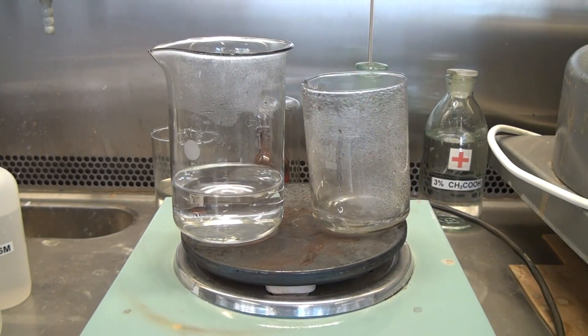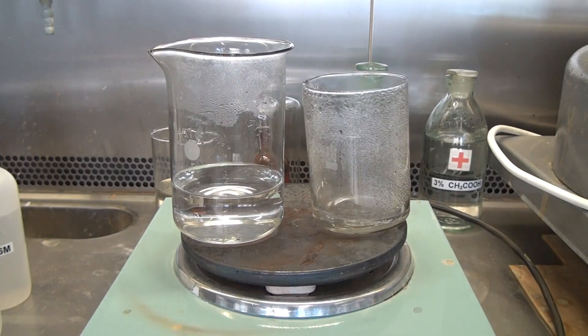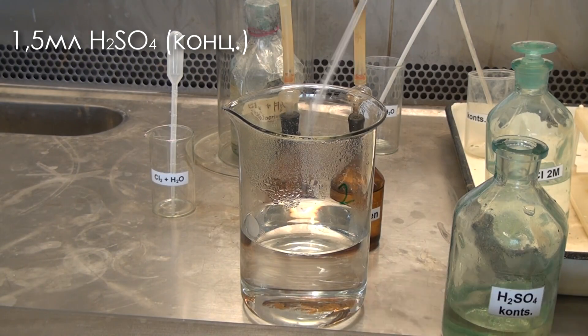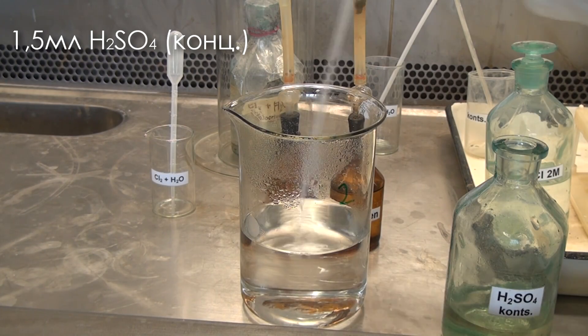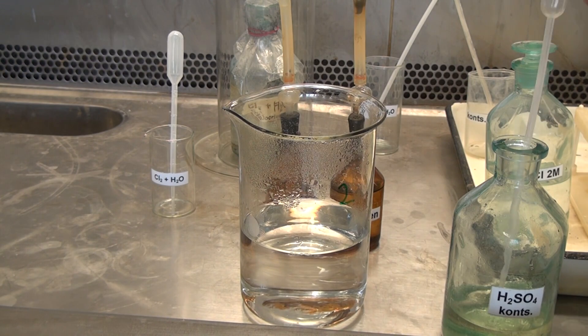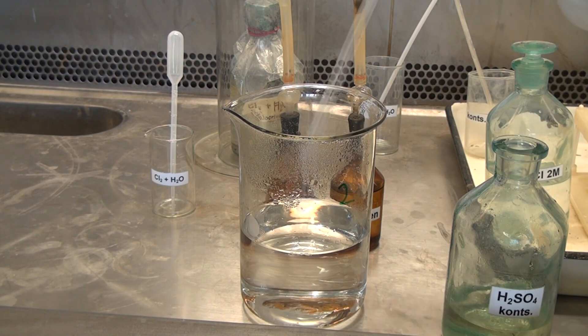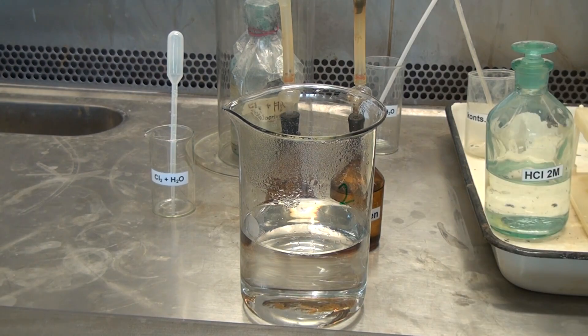Once the potassium iodate is fully dissolved, add 1.5 milliliters of concentrated sulfuric acid into the beaker. Then bring the solution up to a volume of about one-third of a liter.